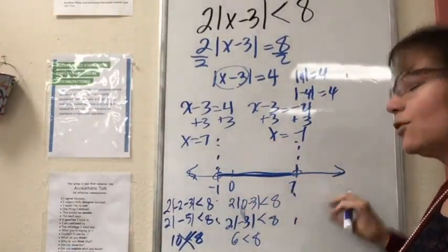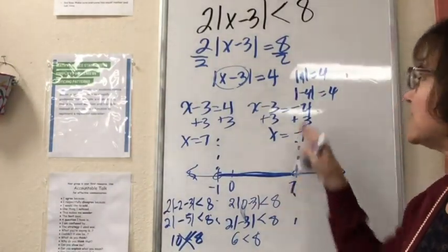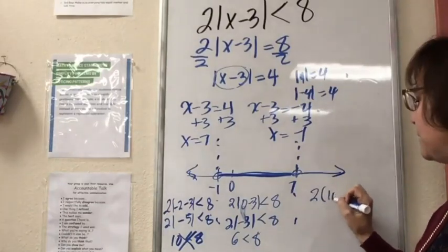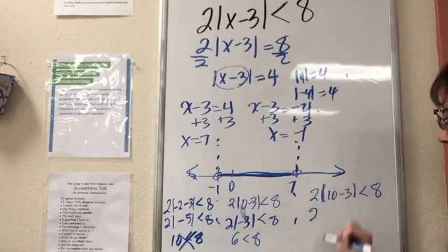Now I want to test just to make sure this outside is not part of the solution. Let's test maybe 10. So I have 2|10-3|, and I want to see if that's less than 8.